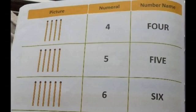In the second row how many math sticks are there? 5 and the number name F-I-V-E. In the third row there are how many math sticks? 6 and the number name S-I-X.